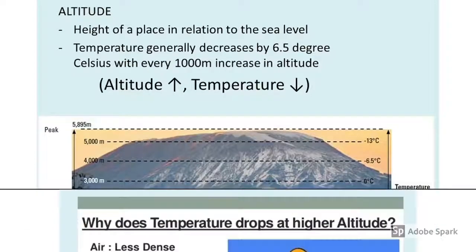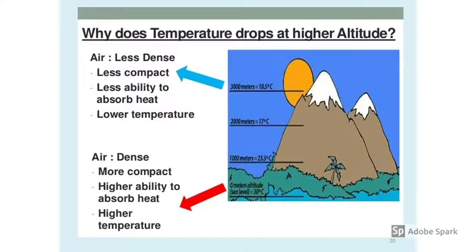The fundamental reason for this phenomenon is that as you go higher up, the air becomes less dense, so it cannot absorb as much heat — and being that you cannot absorb so much heat, your temperature will be lower. Conversely, at lower altitudes the air is denser and more compact, so it can absorb more heat and therefore the temperature will be higher.